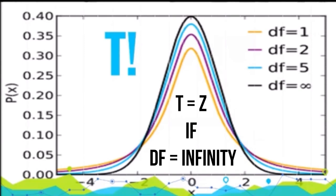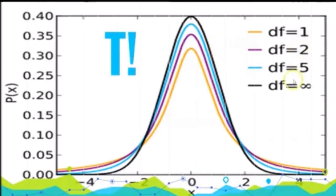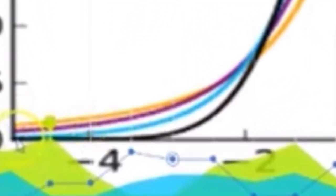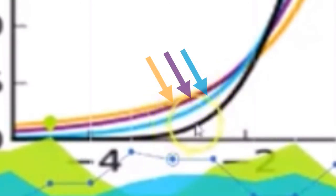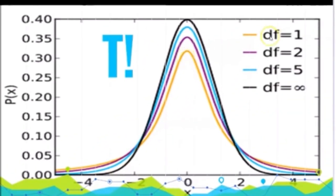When you have fewer degrees of freedom, more values are in the tails and fewer values are in the center. This makes it harder to have a very rare value. The space under the curve represents how frequently something occurs — probability of x is on the y-axis. Where the curve converges on the x-axis faster, values are rare but not yet considered statistically significant. The lowest degrees of freedom curve stays farthest from the x-axis for the longest distance from the mean.